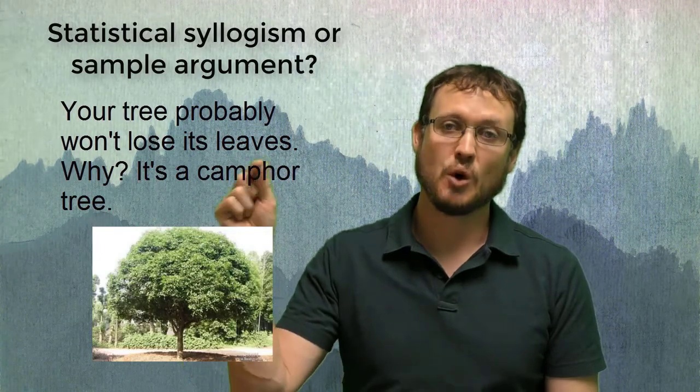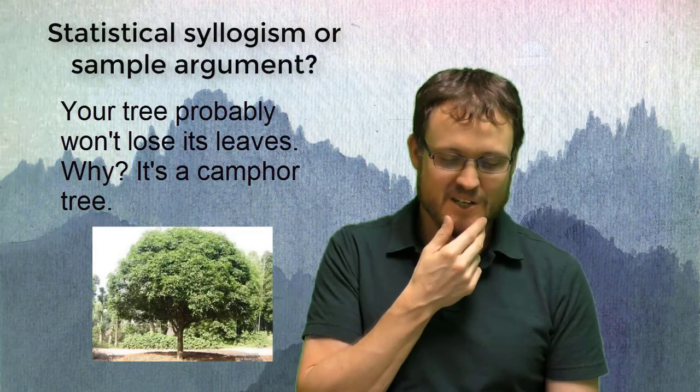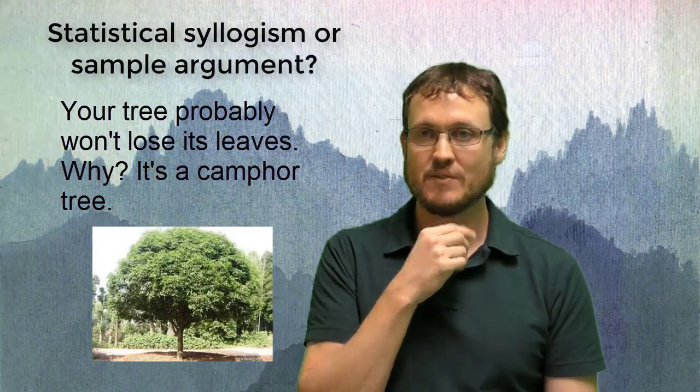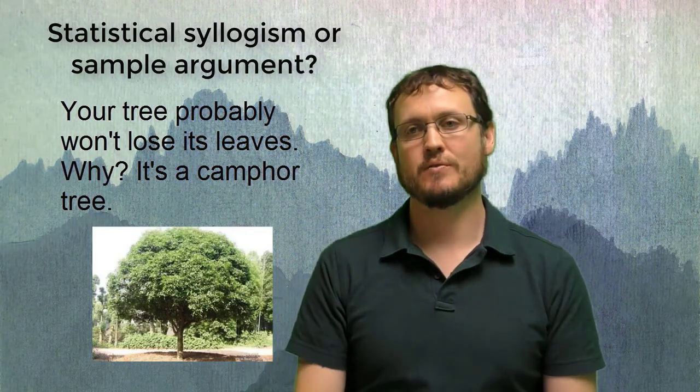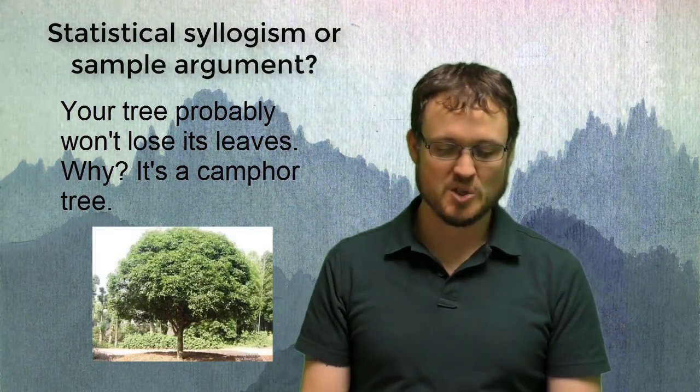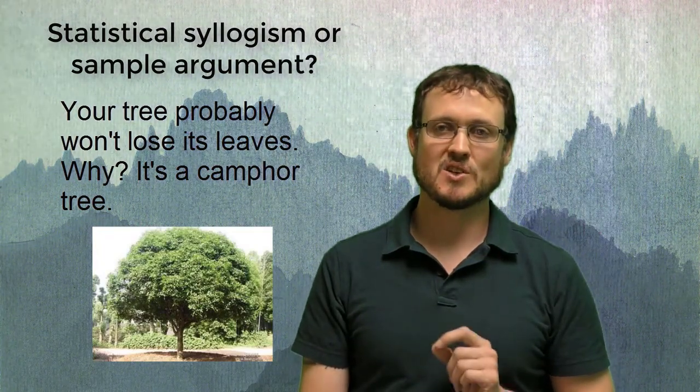The why is the reasoning, the evidence supporting the conclusion. So the reason that your tree won't lose its leaves, conclusion, the reason, premise, is it's a camphor tree. So this very clearly goes to a specific conclusion about your tree, which is what makes it a statistical syllogism.